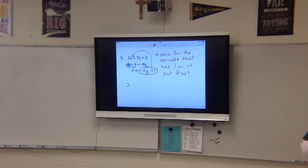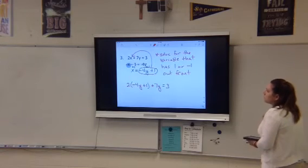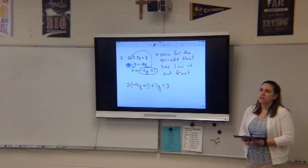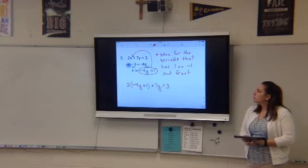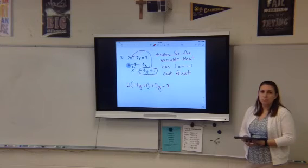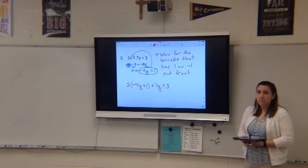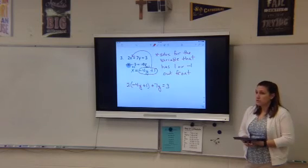Okay? So we've got 2. In place of x, we have negative 4y plus 1 plus 7y equals 3. Let's stop there. Does anybody have a question about any of that so far? Ashley? So like when you're replacing the equation, you do the x for the x and the x for the y. Anybody else? Okay.